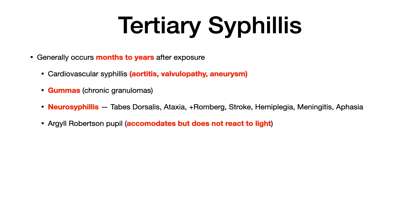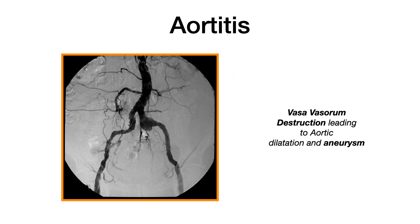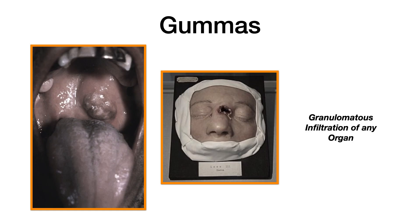With aortitis, know from a pathophysiological perspective that this is due to destruction of the vasovasorum. The inflammation caused by tertiary syphilis destroys the vasovasorum, leading to aortic dilatation, valvulopathy, and potentially aneurysm. The gummas are chronic granulomatous inflammation occurring on the face and in the mouth or palate area. Know that it is granulomatous inflammation, because the test writer could connect syphilis with immunology and ask about granuloma formation.